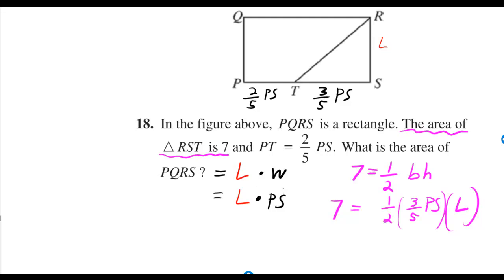Well, PQRS is just the rectangle, and the area of a rectangle is length times width. The width in this case is PS, the length I just kept as L.